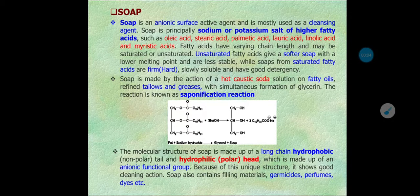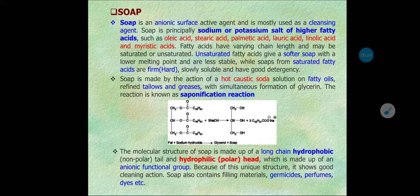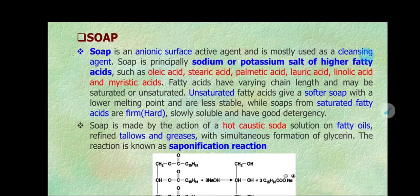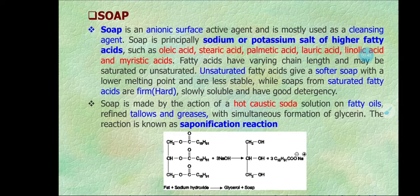Hello students, good morning. I welcome you all to the class of industrial chemistry. Yesterday we started chapter number four: soap and detergent. We already discussed the introductory part. Soap and detergent are molecules, chemically called surface active agents, and combined they are named surfactants. Surfactants are of different types based on the charge on their head group or polar group.